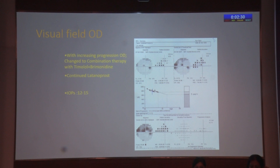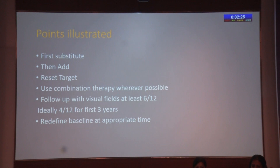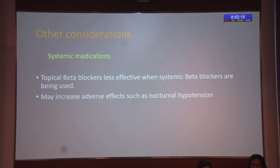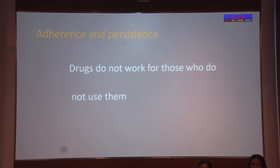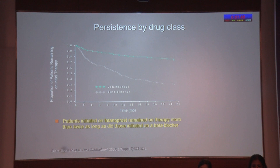A second case: IOP around 24 and 26, hypertensive on calcium channel blockers — moderate glaucoma with disc and field changes. We started with timolol, got a 25% IOP drop, but over five years the IOP started creeping up, so we changed to latanoprost. There was progression, so we combined timolol and latanoprost over the next few years. The patient continued to progress slowly, so we changed to combination therapy with timolol and brimonidine plus continued latanoprost. Points illustrated: first substitute, then add; reset the target; use combination therapy wherever possible; follow up with visual fields at least once in six months; and redefine baseline visual field at the appropriate time.